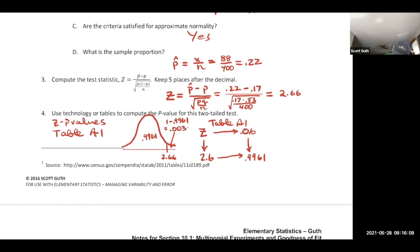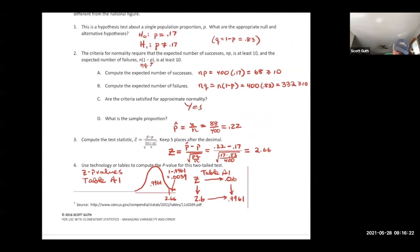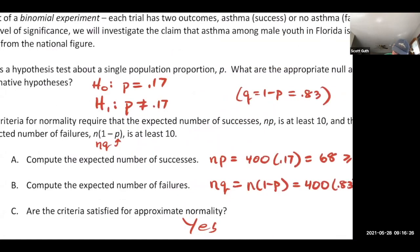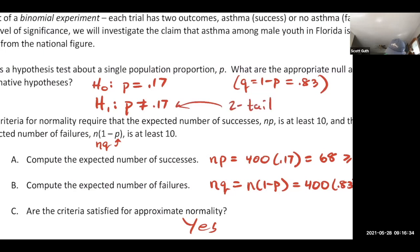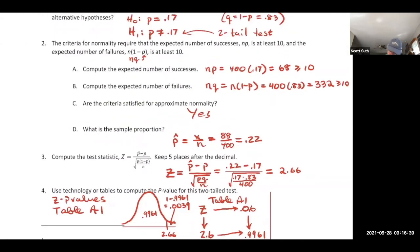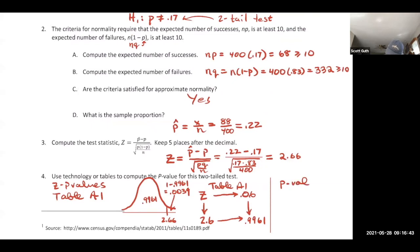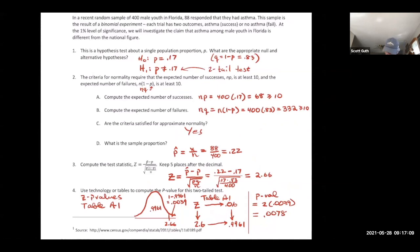Is 0.0039 our p-value? No — you have to multiply by two because it's a two-tailed test. So our p-value is 2 times 0.0039 = 0.0078. That's still less than alpha = 1%, so we reject the null hypothesis.